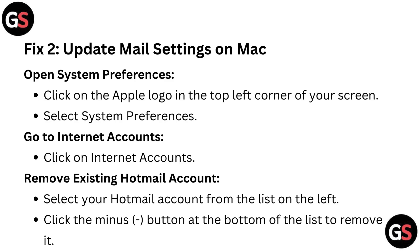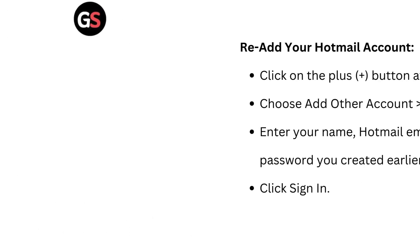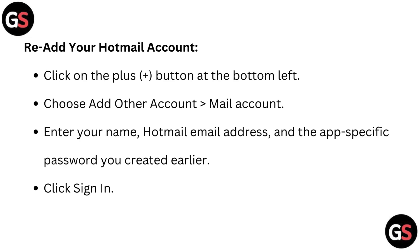Fix two: Update Mail settings on Mac. Click on the Apple logo in the top left corner of your screen and select System Preferences. Go to Internet Accounts. Select your Hotmail account from the list on the left and click the minus button at the bottom to remove it. Then click the plus button, choose to add the account, and go to Mail Account. Enter your name, Hotmail email address, and the app-specific password you created earlier, then click Sign In.